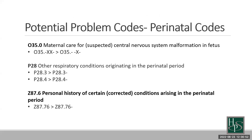Our maternal or perinatal codes that are changing are: maternal care for suspected central nervous system malformation in the fetus, other respiratory conditions originating in the perinatal period, and a Z code for personal history of certain corrected conditions arising in the perinatal period. Not a lot there — it's only going to apply if you have perinatal cases and if those perinatal patients have these specific codes.